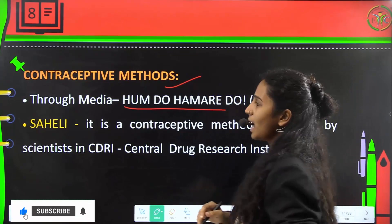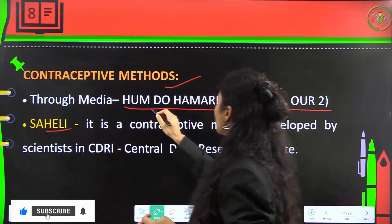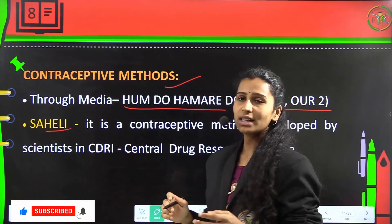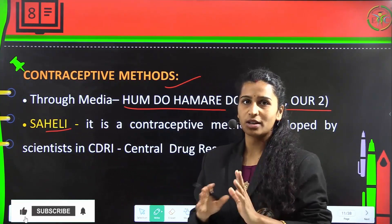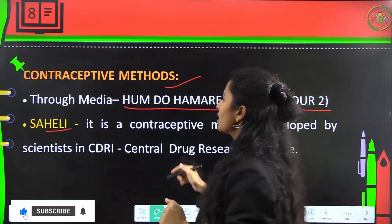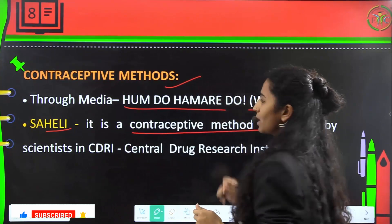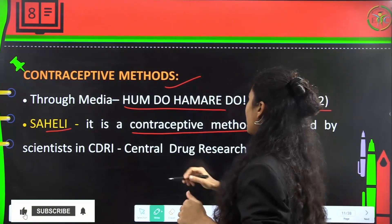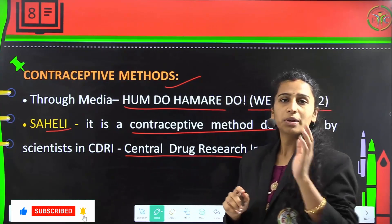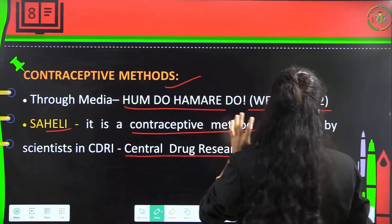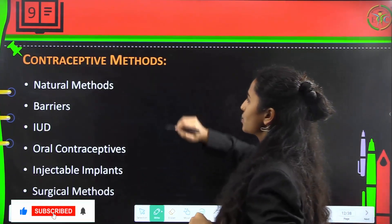Regarding contraceptive methods, slogans like 'Hum Do Hamare Do' — meaning 'we two, ours two' — were used through media, deciding that a family should have a maximum of 2 children. Saheli was a contraceptive method developed by scientists of the CDRI, the Central Drug Research Institute, to prevent or limit population explosion.